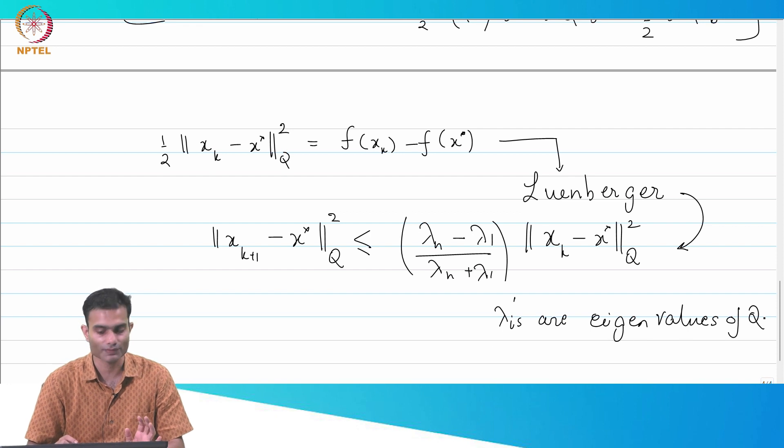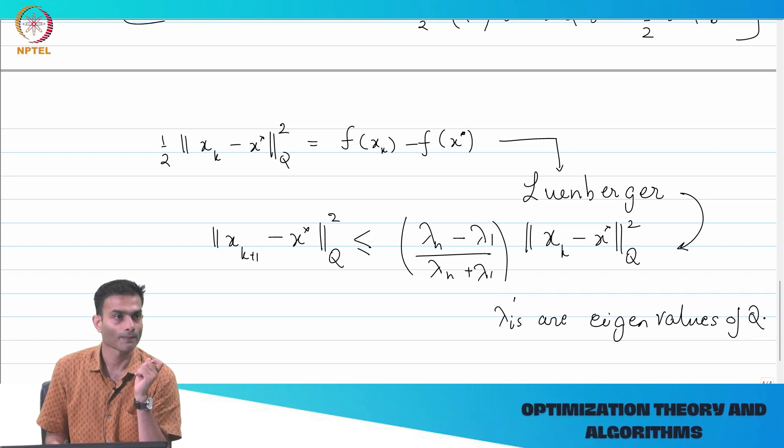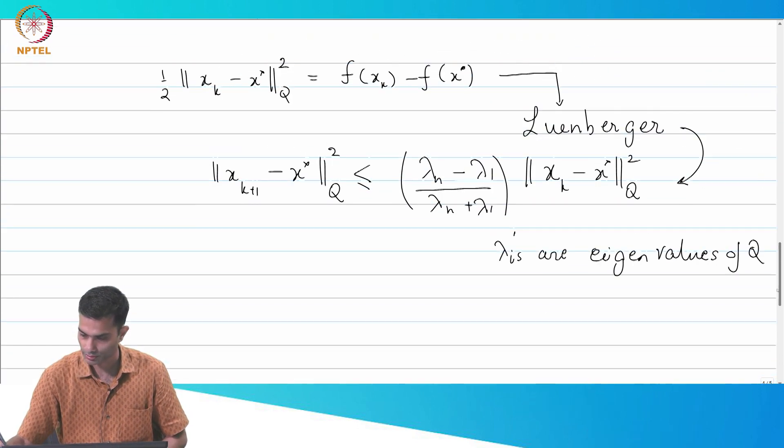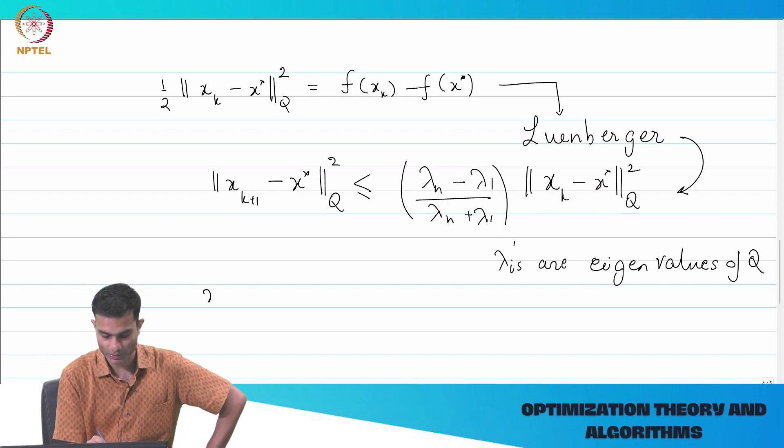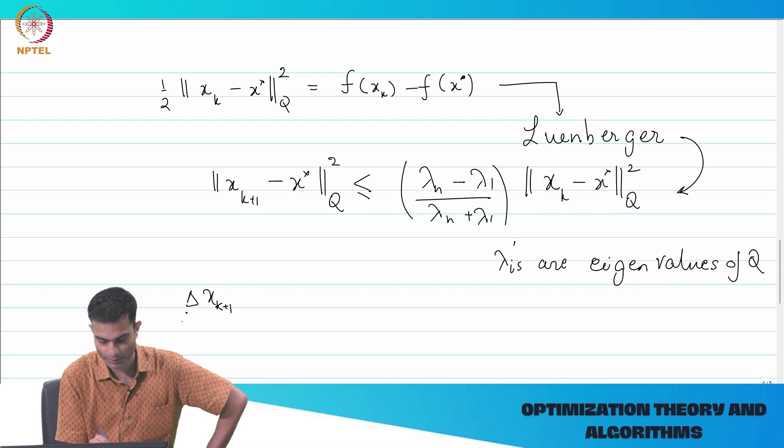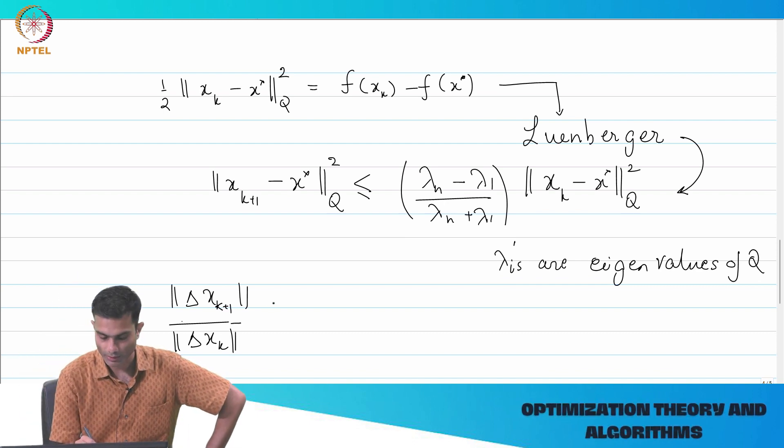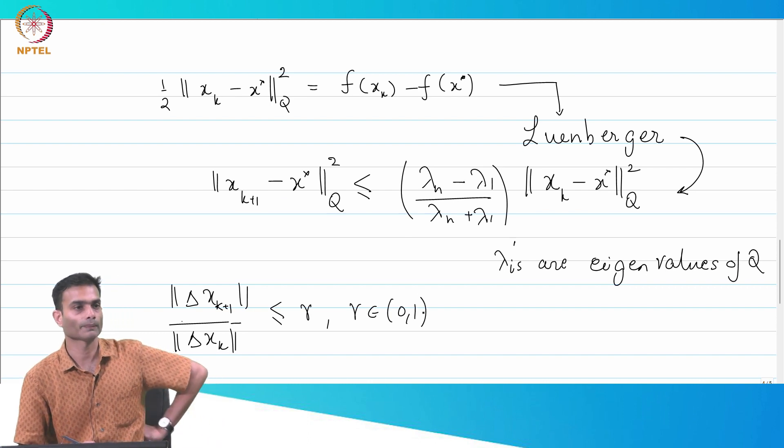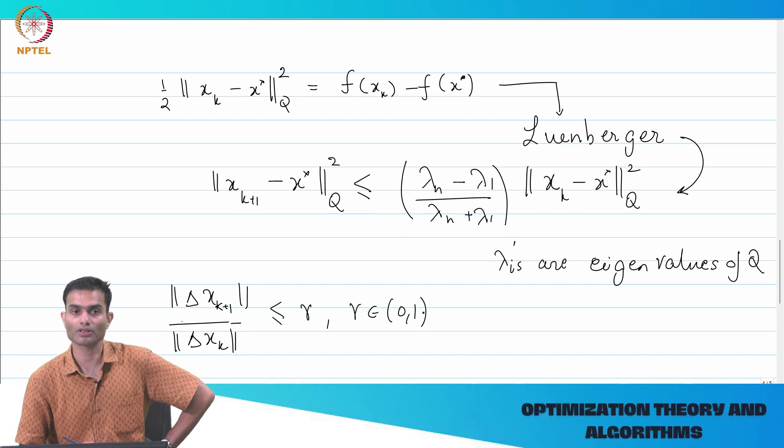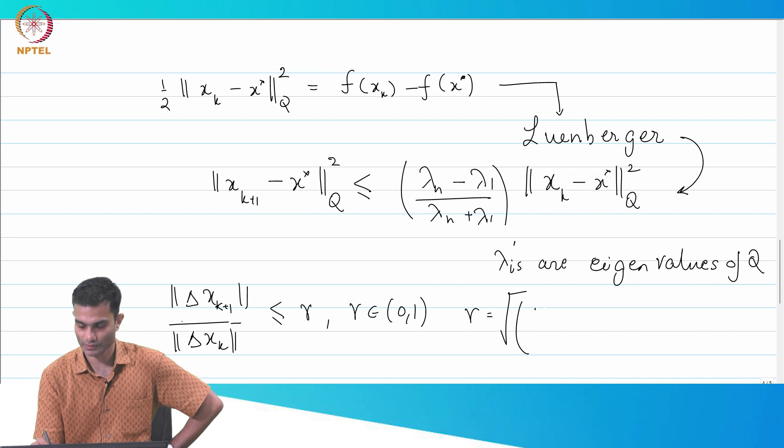These are the lambda i's are eigenvalues of Q. There is a similar question that you will also find in the tutorial about this. So, now this is a very useful result because if you look at the definition of linear convergence, what was the expression that you had? What was the ratio that we had when we spoke about linear convergence? The ratio of what to what should be less than something. It was x_k, so let's call it delta x k plus 1 norm divided by delta x_k. Delta x is x_k plus 1 minus x star, was what? Less than equal to r, where r was 0 to 1.